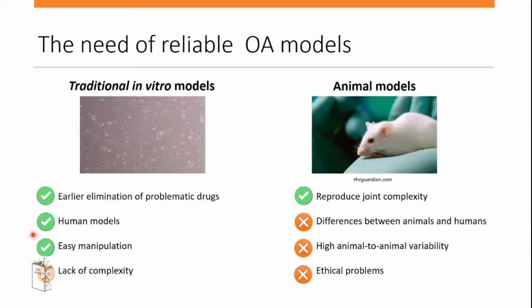We have a lack of both therapeutic products and traditional models — both in vitro and animal models. Traditional in vitro models lack complexity, while animal models, even if able to recapitulate joint complexity, present many differences, high variability between animals, and serious ethical concerns.